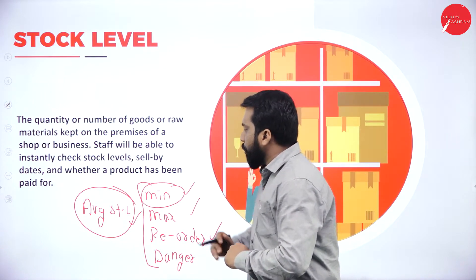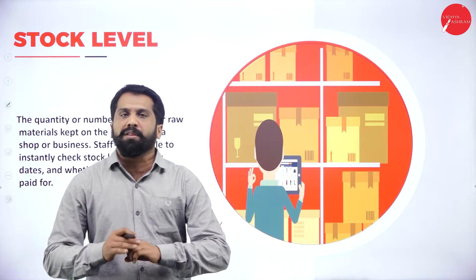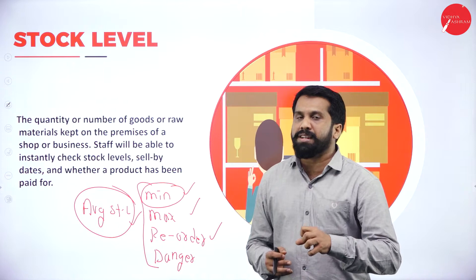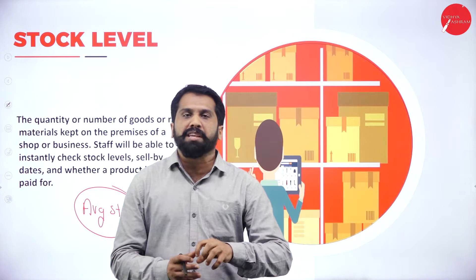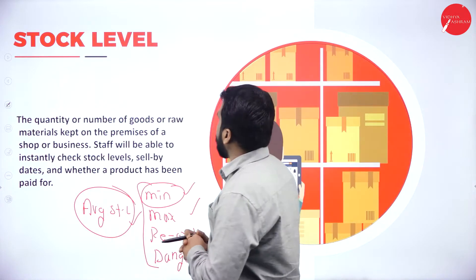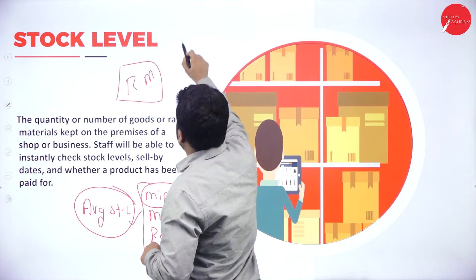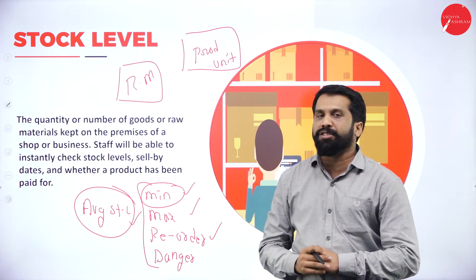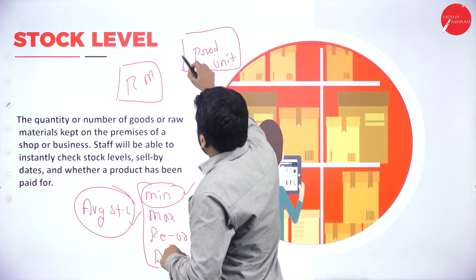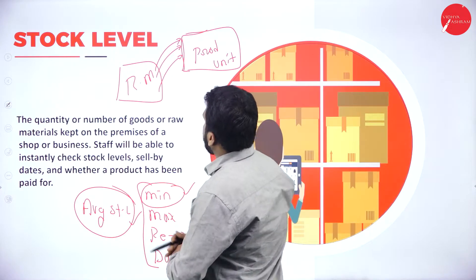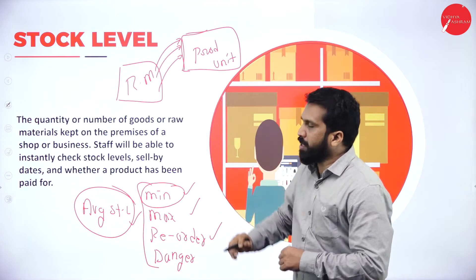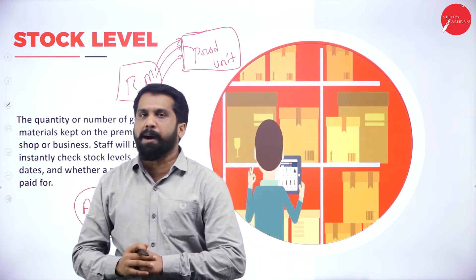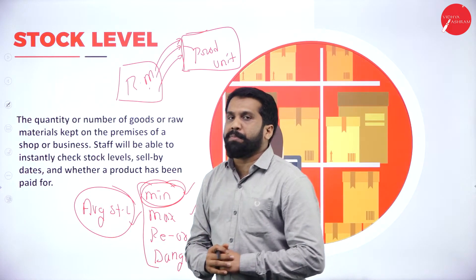What do you mean by minimum stock level? Some companies are very small in quantity as well as capital. If you want to produce a product, you need raw materials. Consider a godown where you keep raw materials and a production unit beside it. From the godown, you take materials as needed — say 10 or 5 units — and carry out your production.